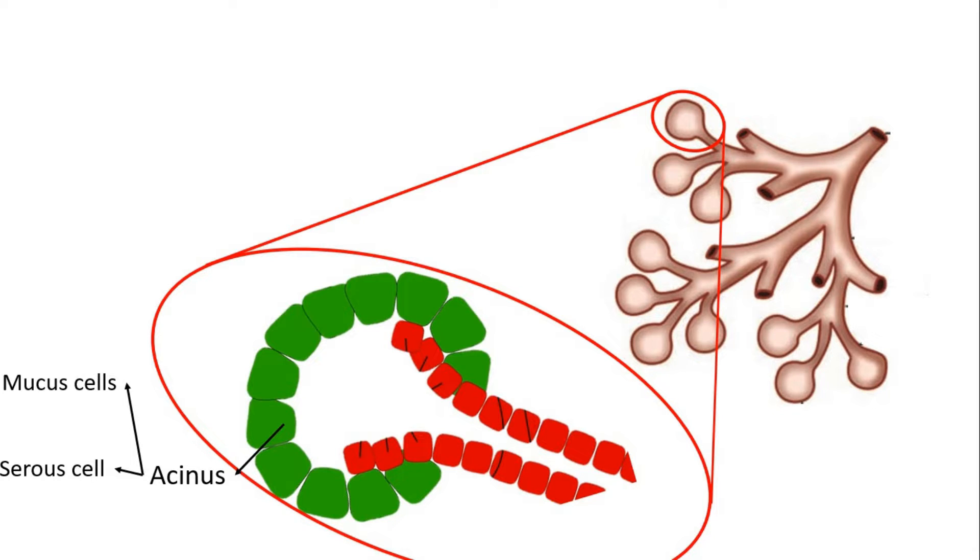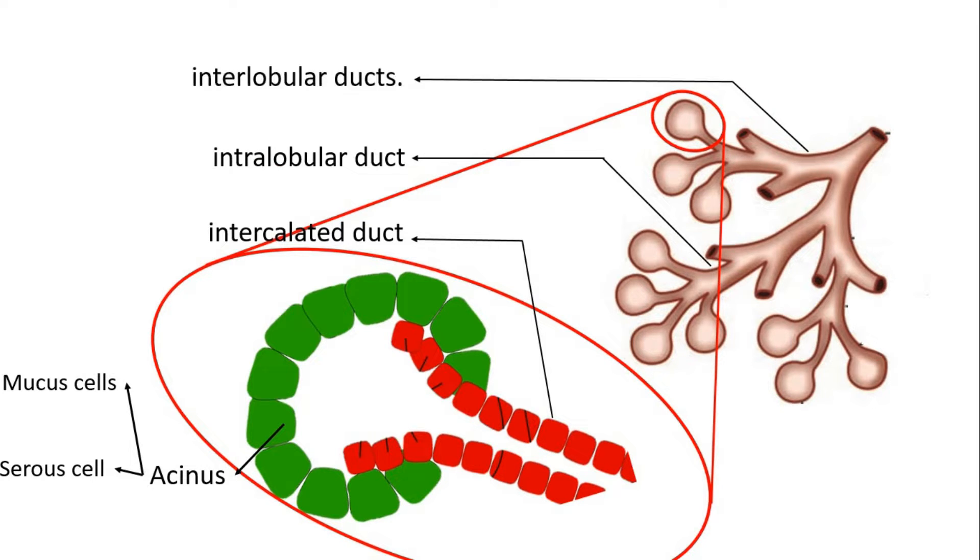These secretions are drained into the lumen of the intercalated duct. Many of them join to form the intralobular duct. Few of those intralobular ducts join to form the interlobular duct, which unite further to form the main duct of the gland. So from the lumen it goes into the intercalated, then to the intralobular, then to the interlobular, and then to the main duct of the gland. A gland with such a type of structure and duct system is called the serous type.